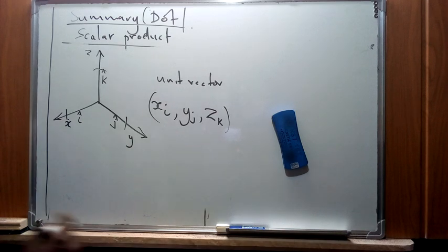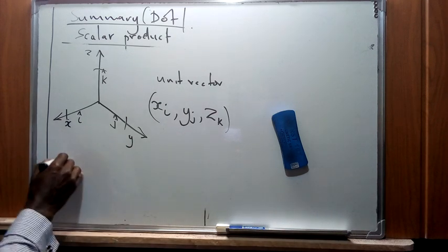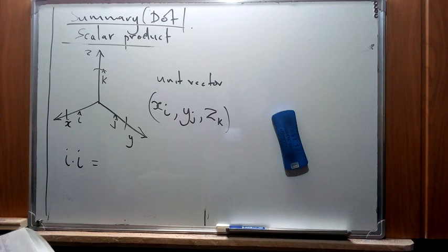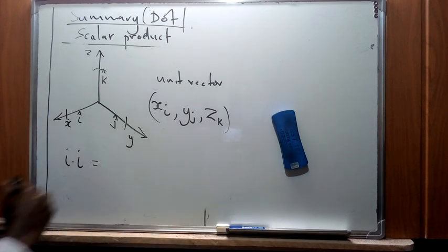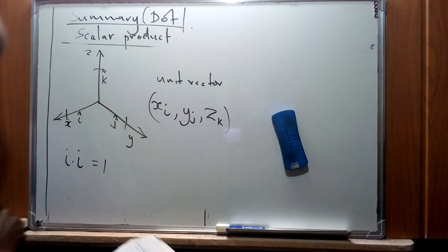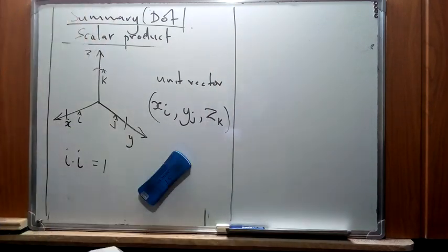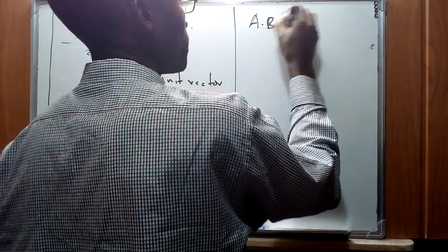And we found out that if we do i dot i, then this is going to give us one. Now we can illustrate this using the specific formula that we have given for a dot product, which is...